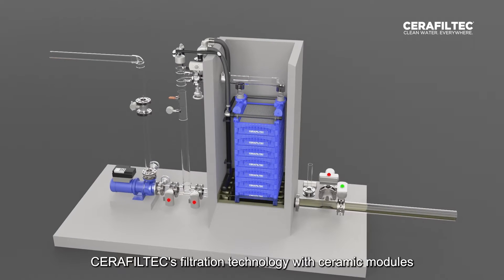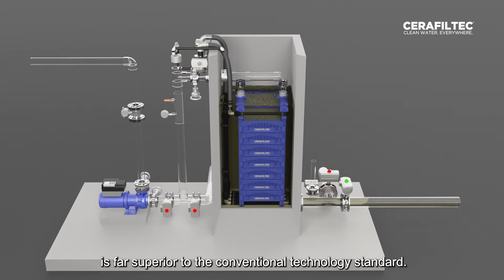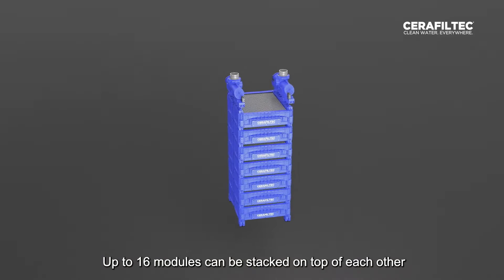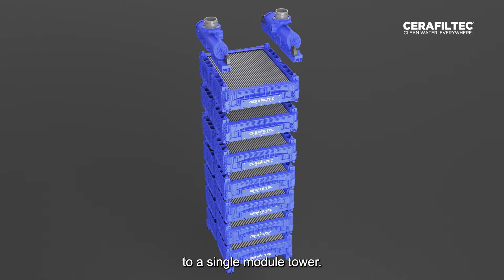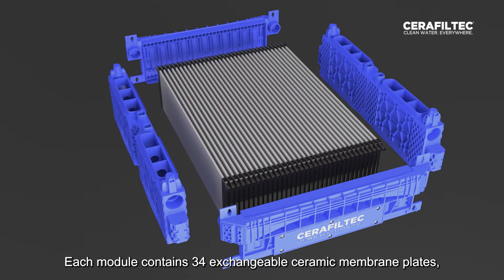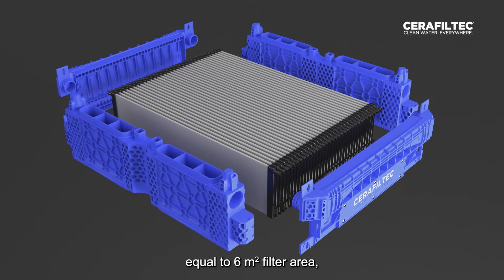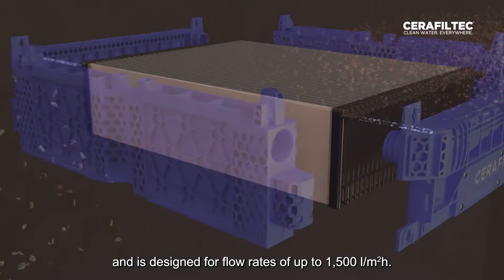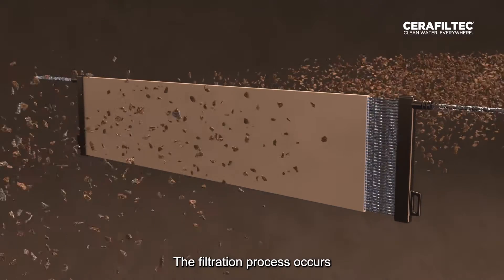CeraFiltek's filtration technology with ceramic modules is far superior to the conventional technology standard. Up to 16 modules can be stacked on top of each other in a single module tower. Each module contains 34 exchangeable ceramic membrane plates, equal to 6 square meters of filter area, and is designed for flow rates of up to 1,500 liters per square meter per hour.